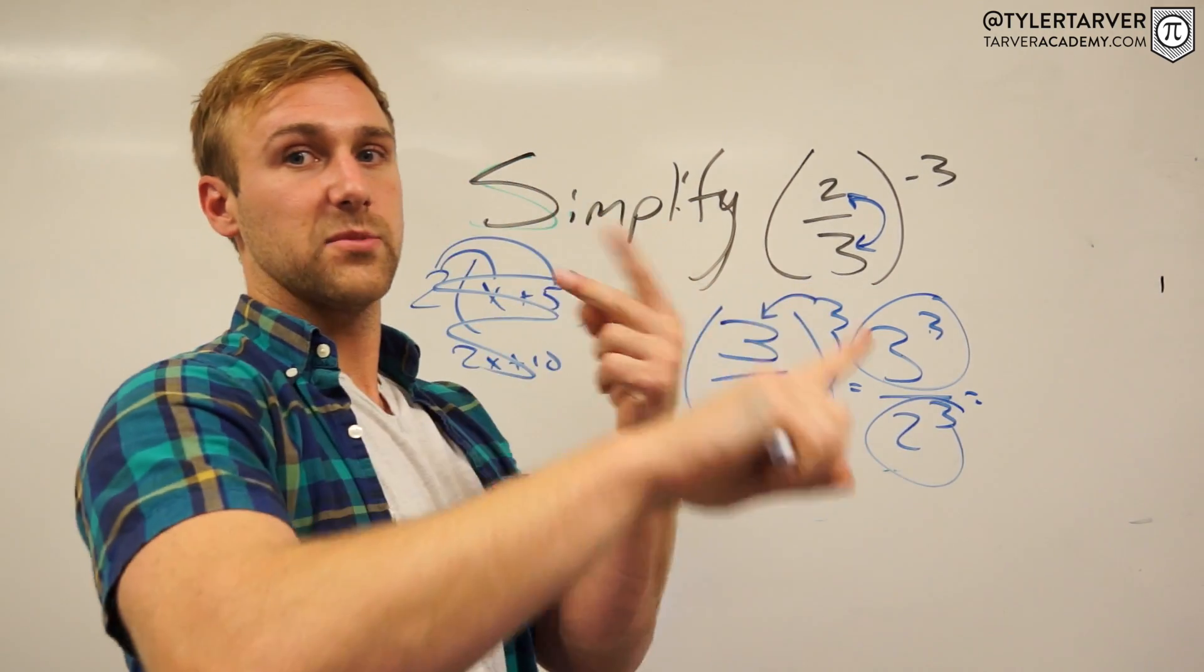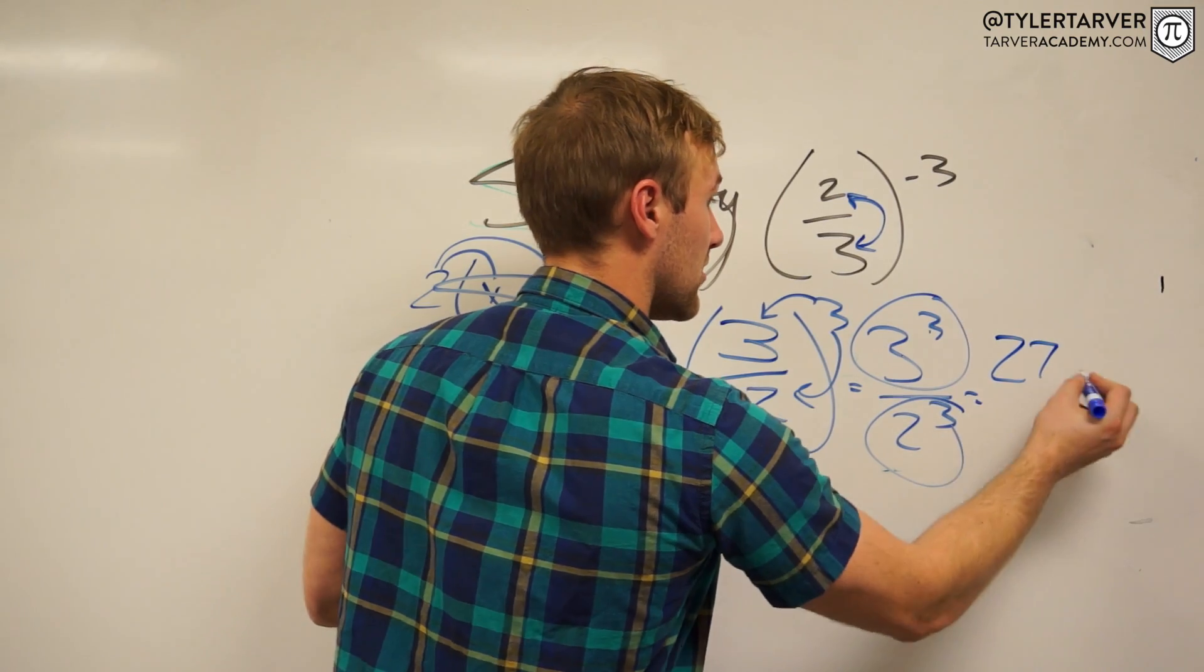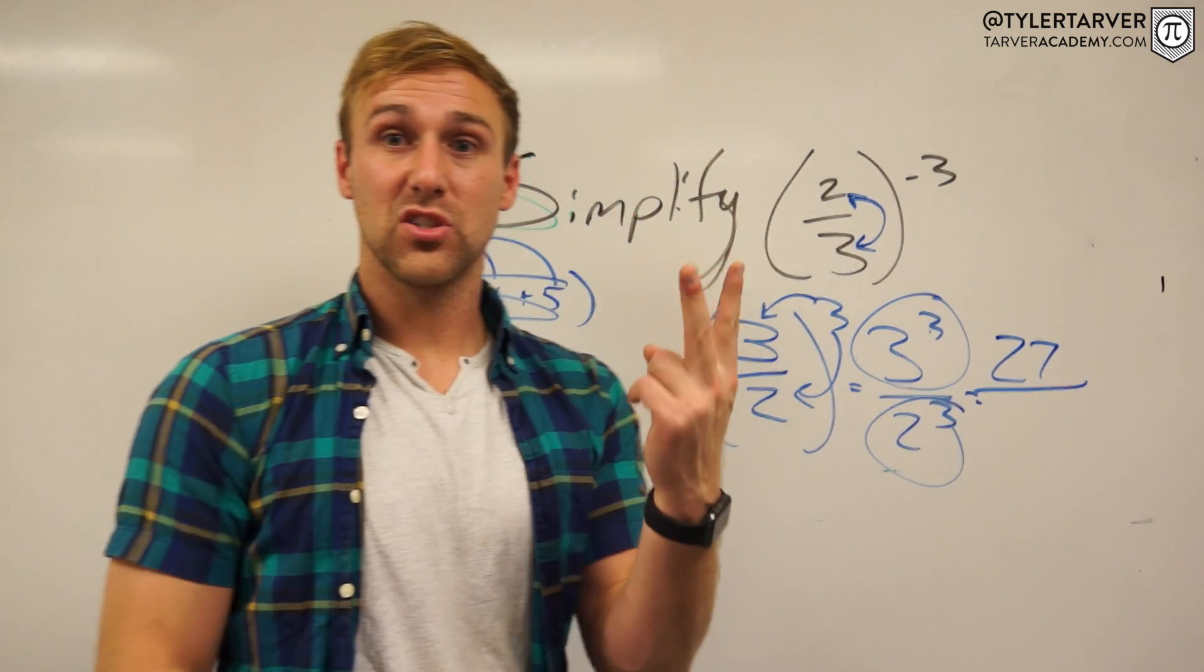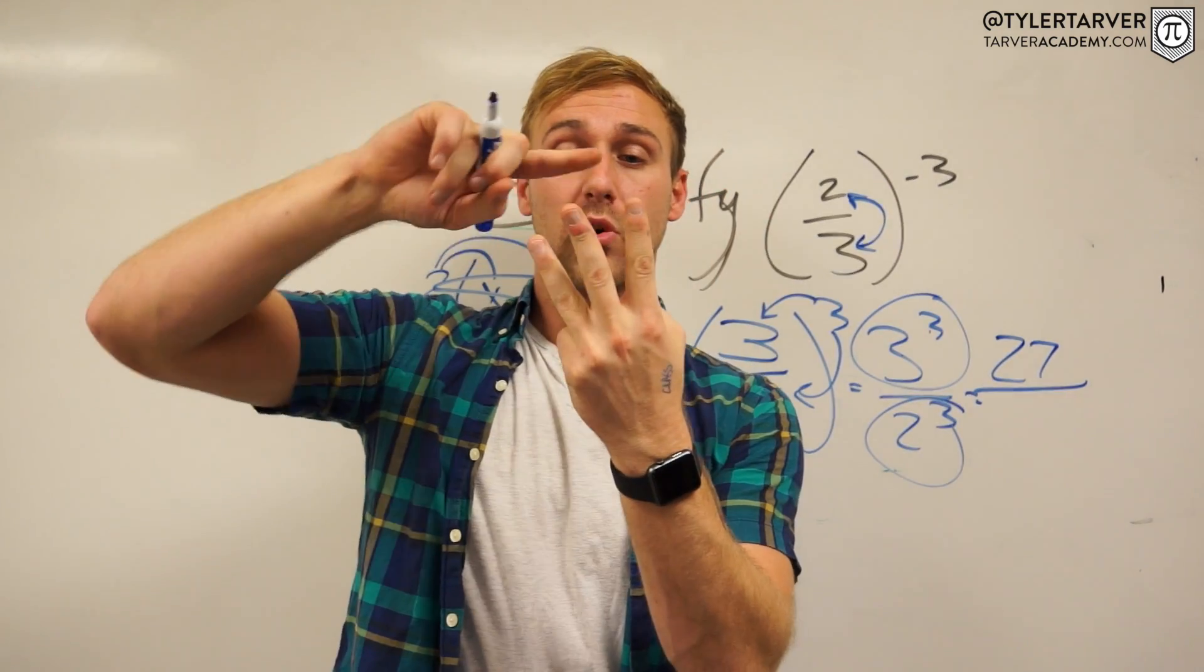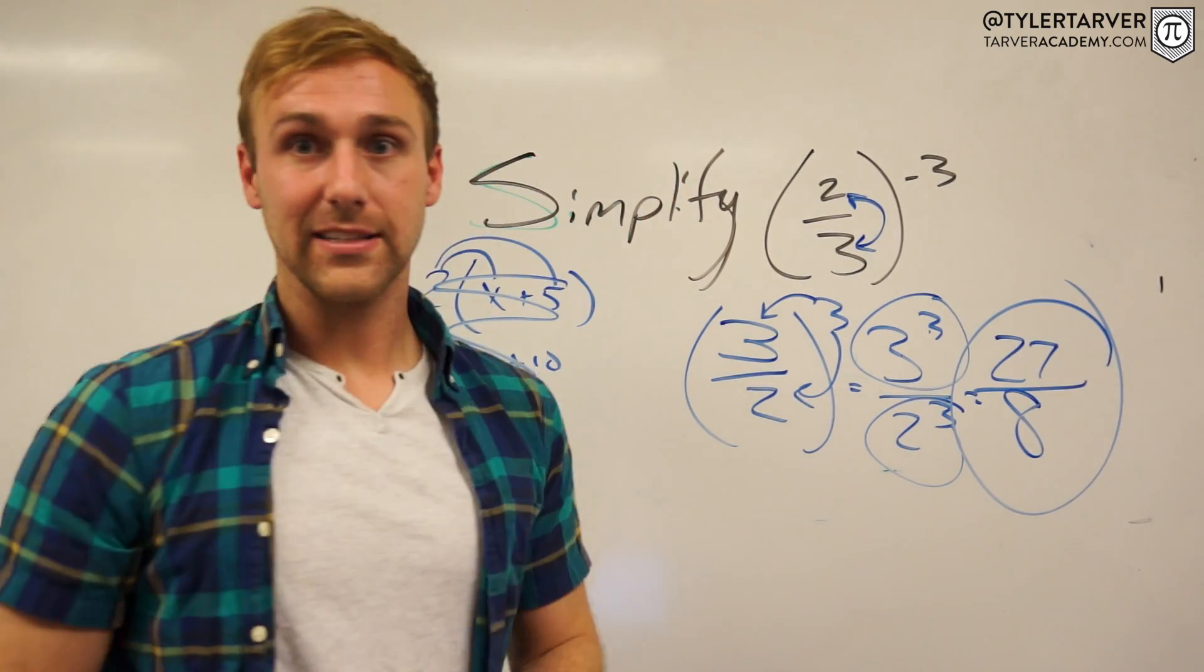3 to the third: 3 times 3 is 9 times 3 again is 27. And then 2 times 2 times 2, which is 2 times 2 is 4 times 2 is 8. So you got 27 over 8, and that's your problem.